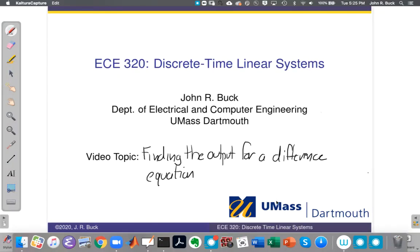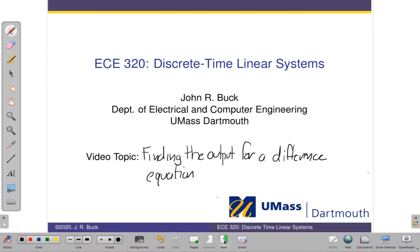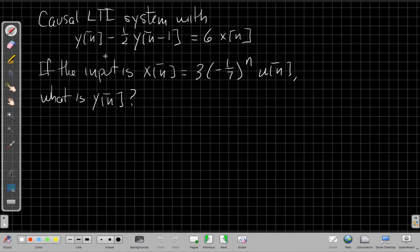Our topic for this video is finding the output for a difference equation using Fourier transform properties. The example I'm going to show you is: if I have a causal LTI system whose difference equation is y[n] - (1/2)y[n-1] = 6x[n], and if the input is x[n] = 3(-1/7)^n u[n], what is the output?